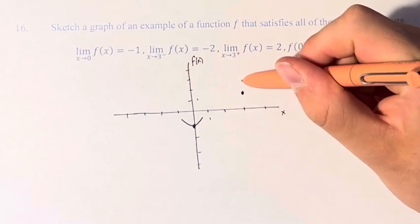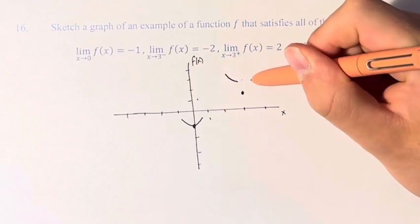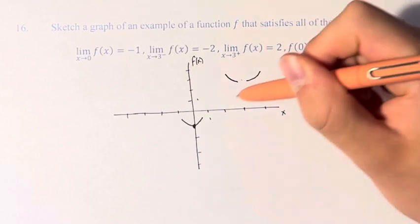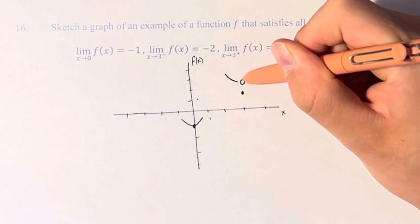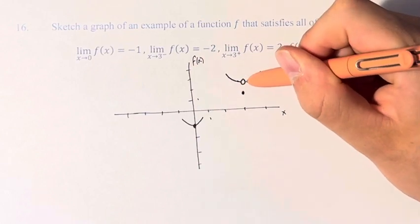So here, we have, as we come from the left and the right, the function's value approaches 2, but it's not actually equal to 2 at the point itself, so we have an open circle.